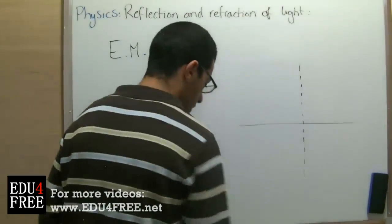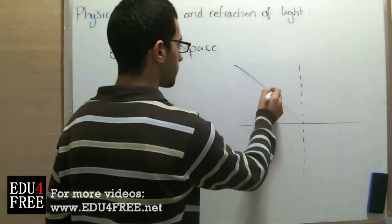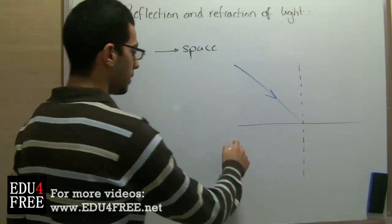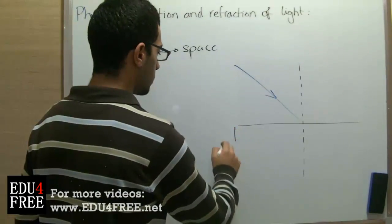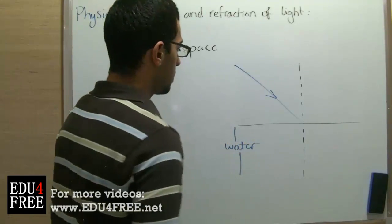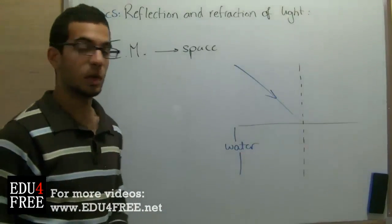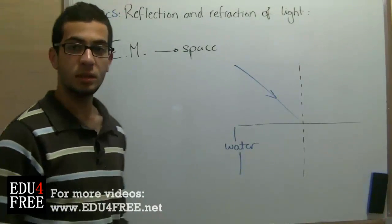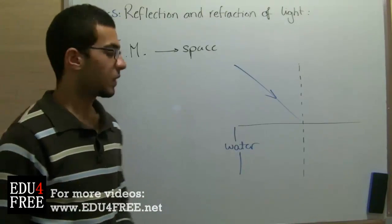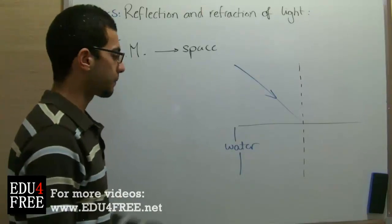So when light falls on a surface that has depth — let's say that this is water — reflection happens to the light, refraction occurs, and some of the light is absorbed.